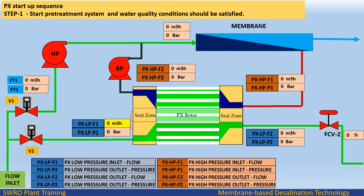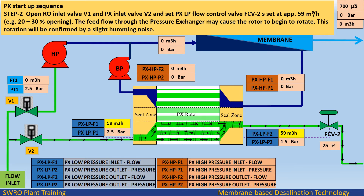PX startup sequence, step 1: start the pre-treatment system and ensure water quality conditions are satisfied. Step 2: open RO inlet valve V1 and PX inlet valve V2, and set PX LP flow control valve FCV2S at 59 cubic meters per hour, with 20–30% valve opening. The feed flow through the pressure exchanger may cause the rotor to begin to rotate, confirmed by a slight humming noise.